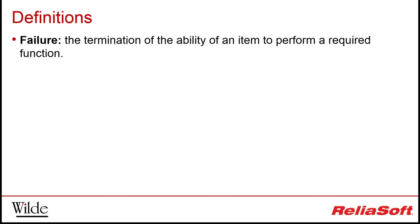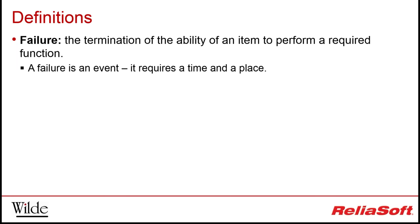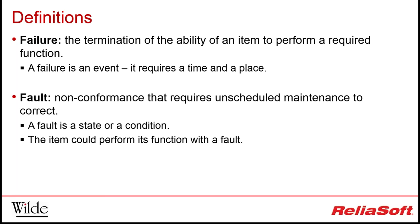One of the most important steps in quantifying reliability is to give a clear definition of what we mean by failure. We define a failure as the termination of the ability of an item to perform a required function — it is an event that requires a time and a place. A fault, on the other hand, although undesirable, does not prevent a desired function from being performed, or it will require unscheduled maintenance to correct. It's not always obvious which category an issue falls into, and this is why it's best to be as specific as possible.